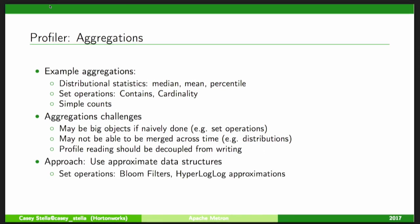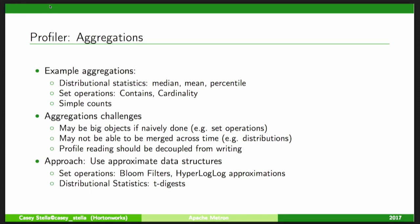We use approximate probabilistic data structures that are sublinear in space. For set operations we use Bloom filters. For distinct cardinalities we use HyperLogLog Plus. For distributional statistics we use t-digests. These data structures form semi-groups that can be merged. You tolerate a small error bar, but in exchange you can look back six months or a year while storing the state in a very succinct data structure.